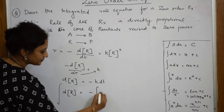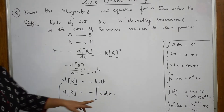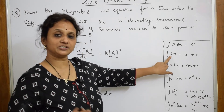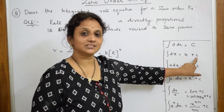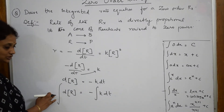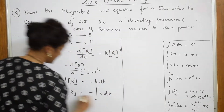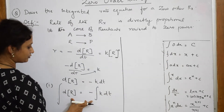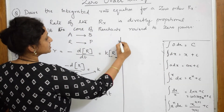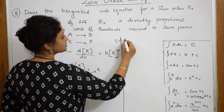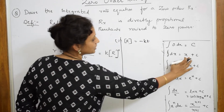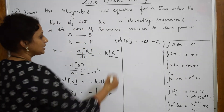Now let us integrate both sides. On integration, what happens is we get a constant. According to the integration formula I stated earlier, integrating d[R] gives [R], and integrating k dt gives kt. Adding the constant of integration, we get: [R] = −kt + I, where I is the integration constant.